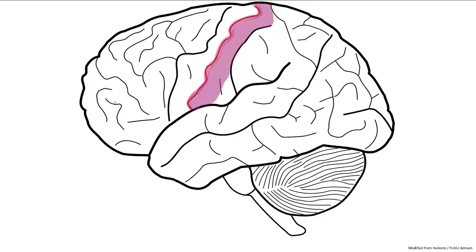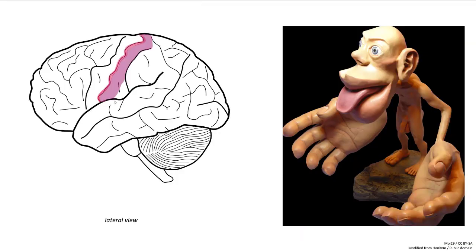Posterior to the central sulcus within the parietal lobe is the post-central gyrus, more specifically known as the primary somatosensory cortex. This gyrus is divided into segments that map out sensations from specific areas of the body. The larger the area on this gyrus for a specific region, the greater the sensitivity, due to a high concentration of sensory receptors. The fingertips and face are very sensitive and have greater space dedicated on this gyrus. A sensory homunculus represents body parts proportional to their dedicated space, with the largest proportions for the lips and hands.